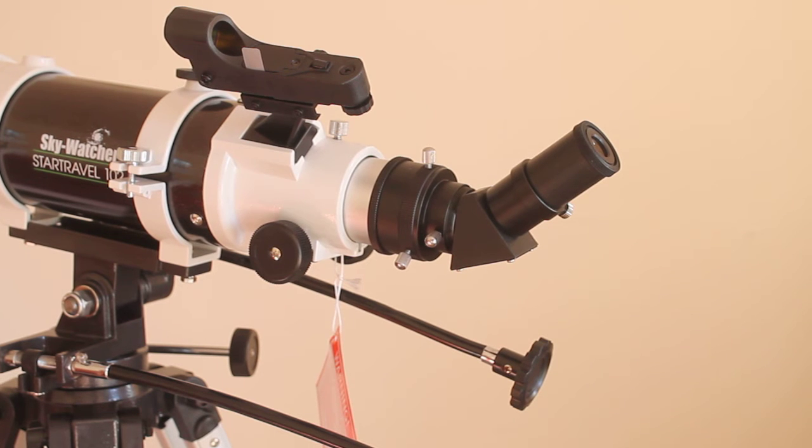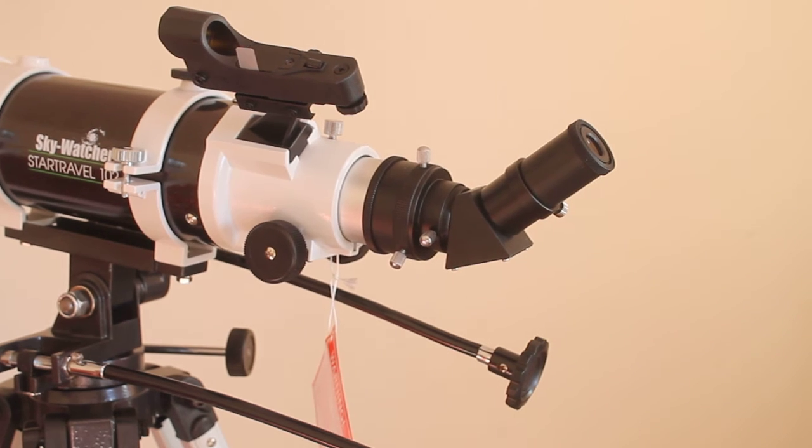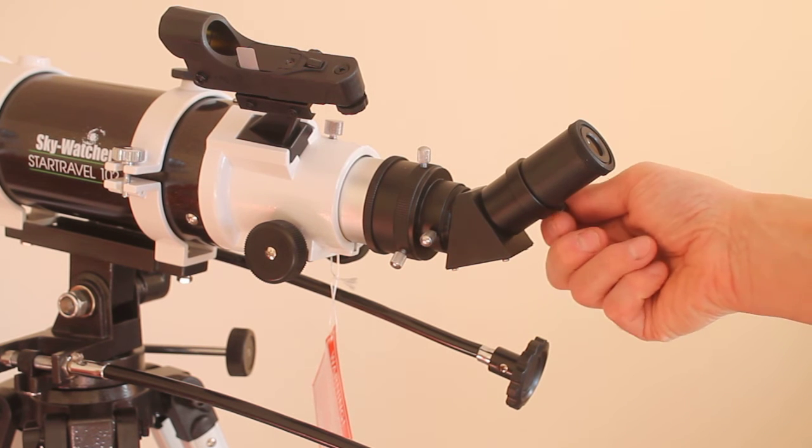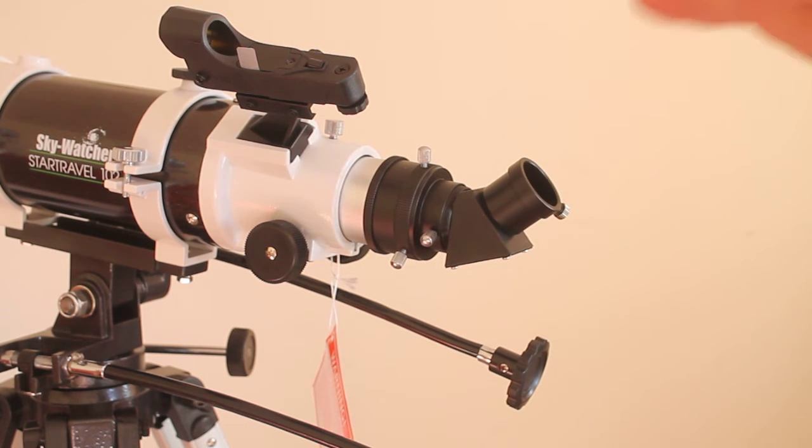I'm referring to this setup, the diagonal and eyepiece I'm going to show you, because diagonals and eyepieces are different. So what I'm going to do is go through everything. I'm taking the eyepiece off - one and a quarter inch - and taking the diagonal off. That's your 1.25-inch.